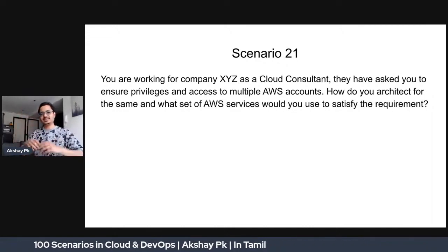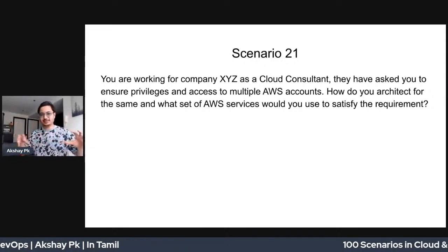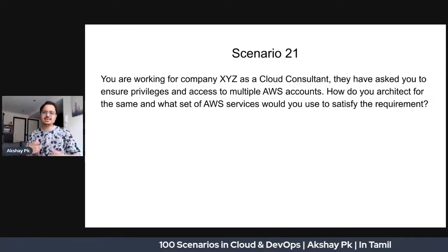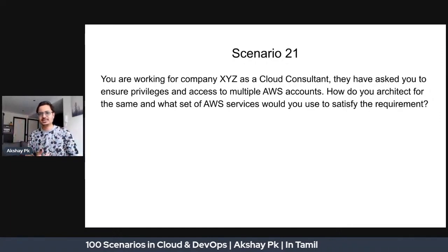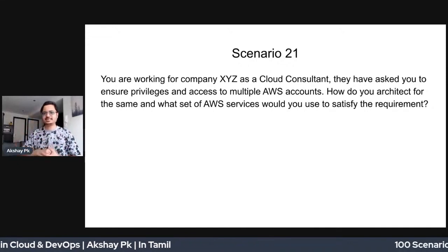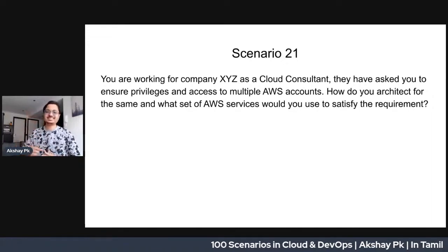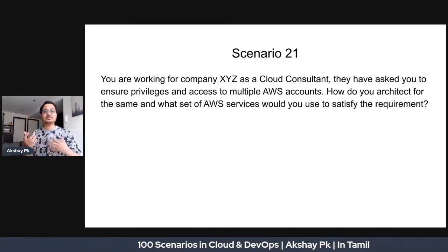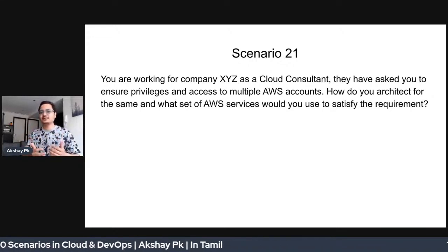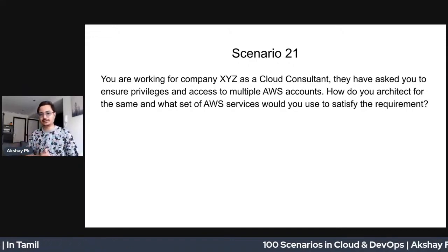The root organizational unit contains multiple organizational units. Each organizational unit has multiple accounts. These organizational units represent different departments and environments — for example, a Dev organizational unit, HR organizational unit, and Finance organizational unit. So the first part of the answer is: use AWS Organizations for managing multiple AWS accounts.